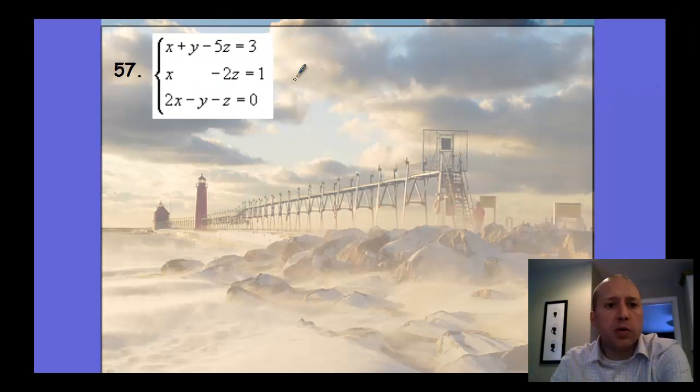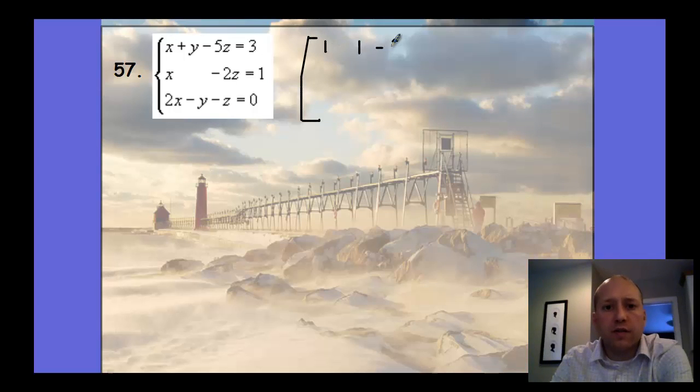Let's add this example here. We're going to change this system into the matrix form. We have 1, 1, negative 5, 3; 1, 0, negative 2, 1; 2, negative 1, negative 1, and 0. So there's our system in augmented form.